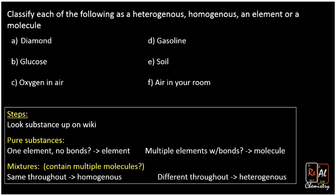In this whole video, we're going to classify each of the following as heterogeneous, homogenous, an element, or a molecule. Here's the thing — you know what a diamond is, but that doesn't mean you know if it's heterogeneous, homogenous, an element, or a molecule.